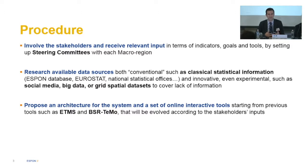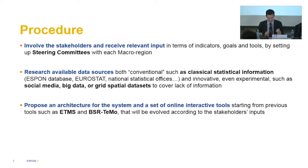So in this case we will start by identifying the possible sources of data and, taking into account these restrictions, try to come up with indicators that can effectively be implemented. Then we will propose an architecture for the system — we already have some ideas on that and have built the prototype already — and propose a set of online interactive tools that will be useful for stakeholders. We don't start from scratch; we are building from the original ESPON territorial monitoring system developed in 2014 and BSR Timo.